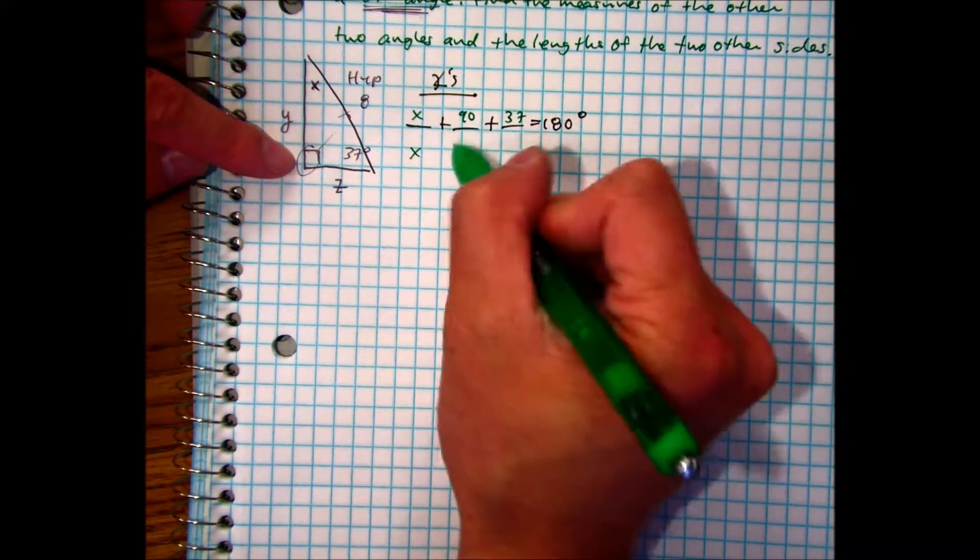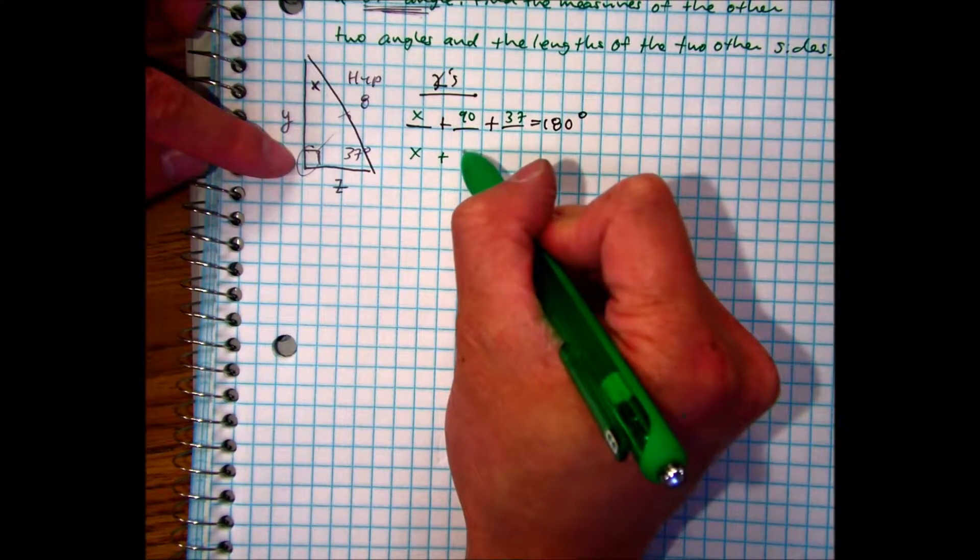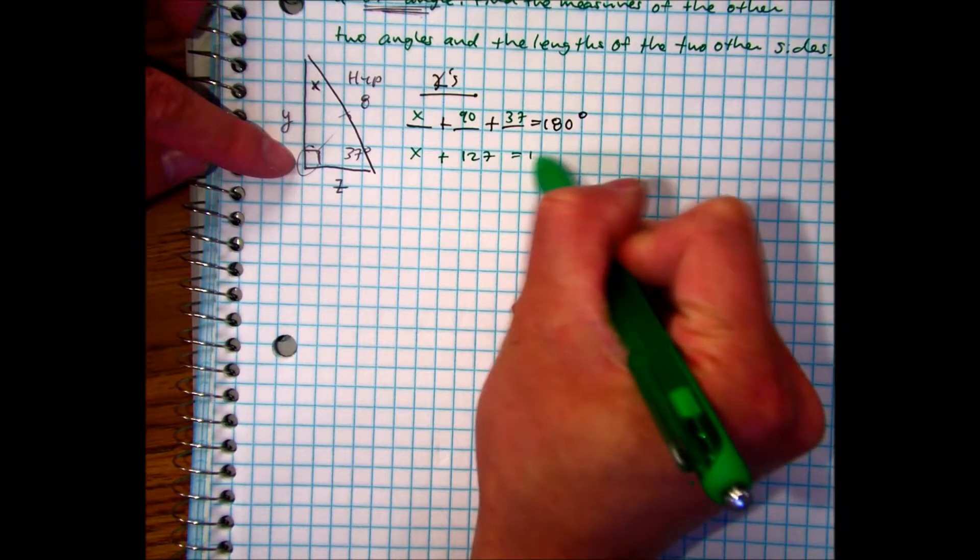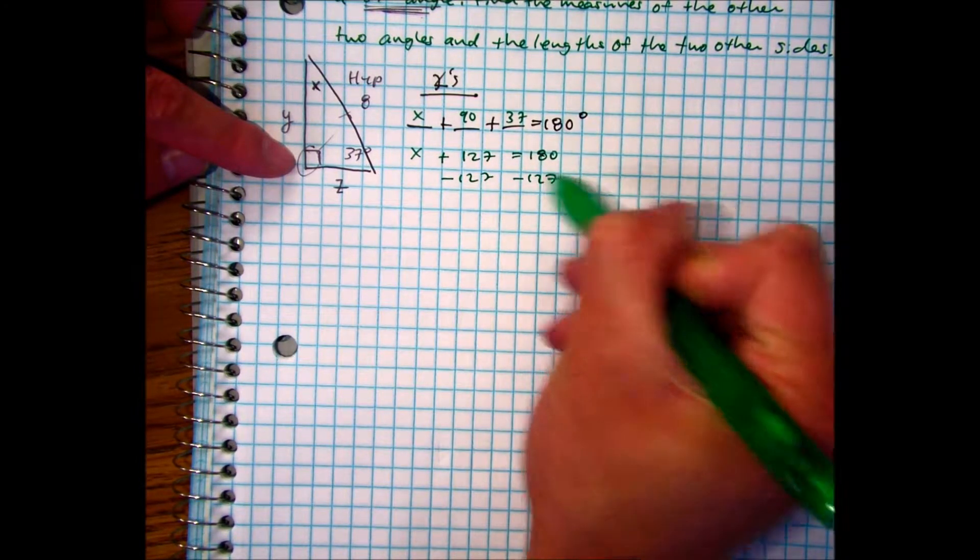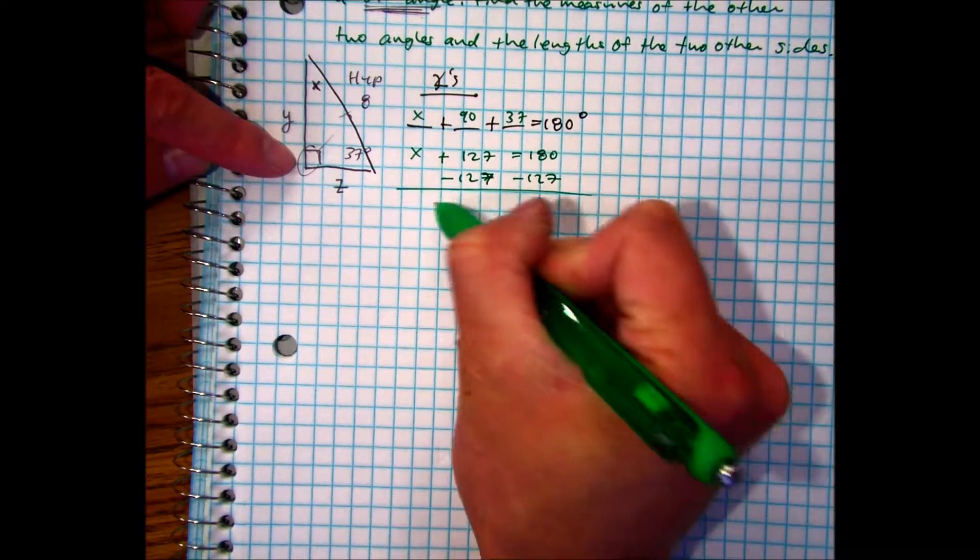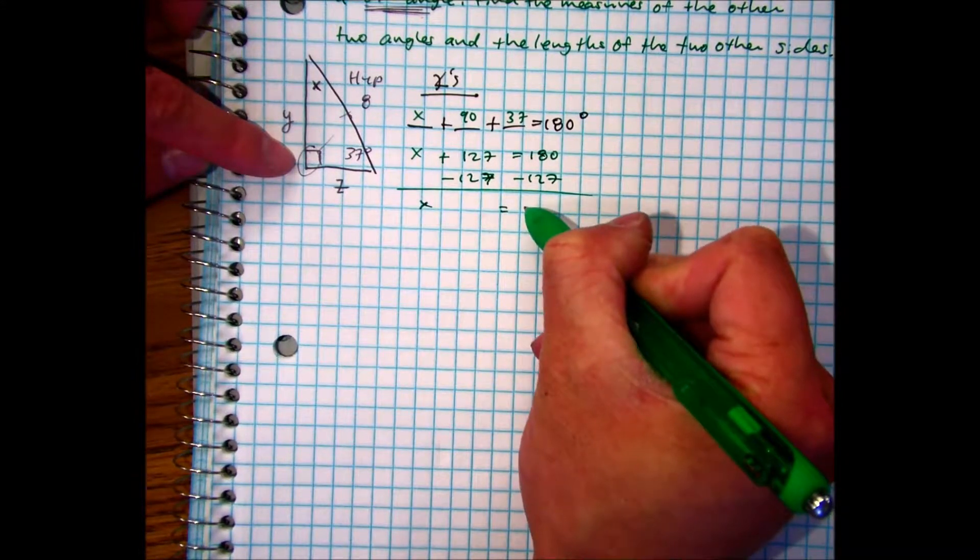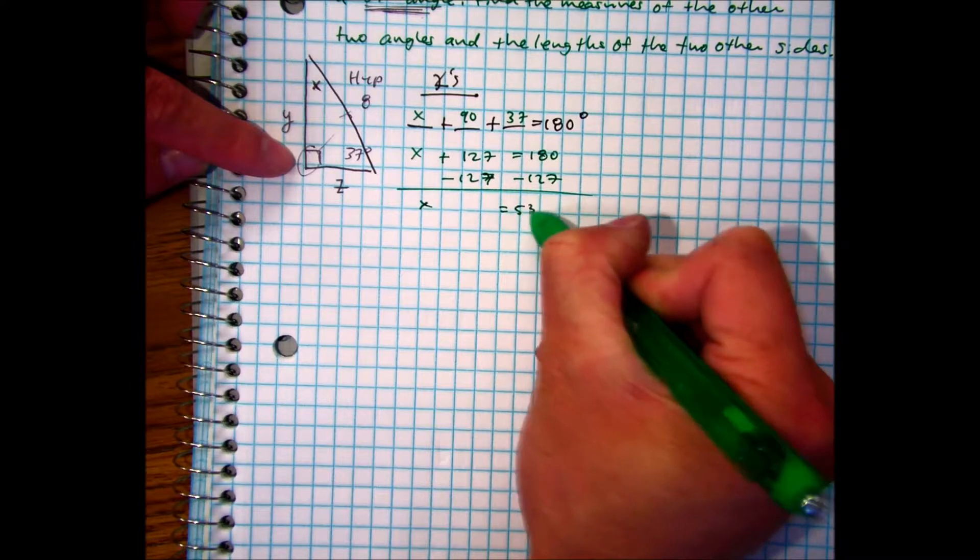If you combine like terms, what do you get? And if you subtract 127 from both sides, raise your hand if you got 53 degrees.